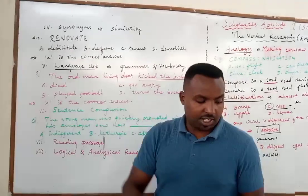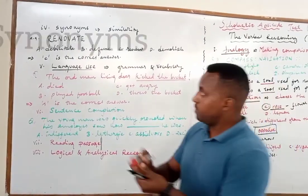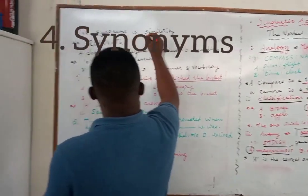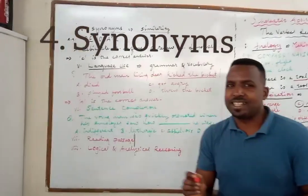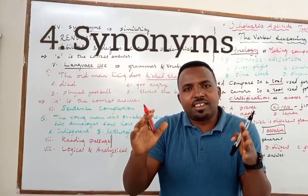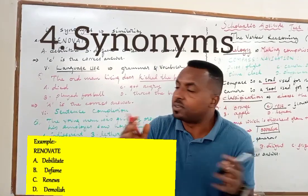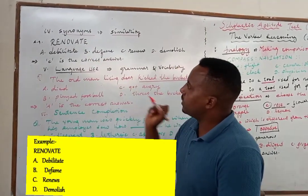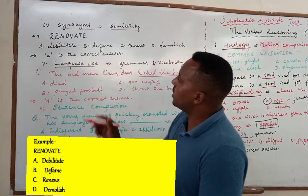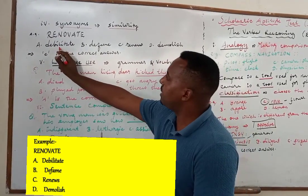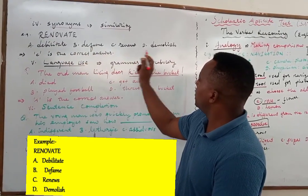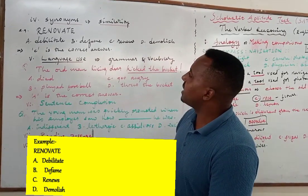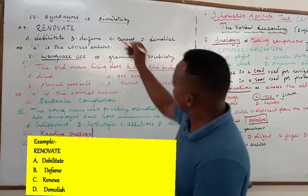The next section is synonym. Synonym is about finding a word with the same meaning. For example, the word given in block letters is RENOVATE. The options are: debilitate, defend, renew, and demolish. The one which has the same meaning is renew — renovate and renew both mean to make something new again.